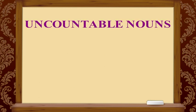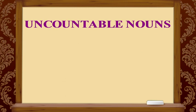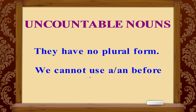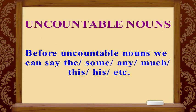Now let's talk about uncountable nouns. Uncountable nouns are those things that we cannot count. They have no plural form. We cannot use 'a' and 'an' before them. Before uncountable nouns, we can say the, some, any, much, this, his, and other modifiers.